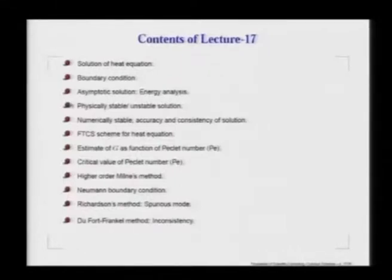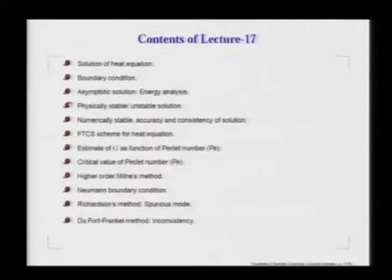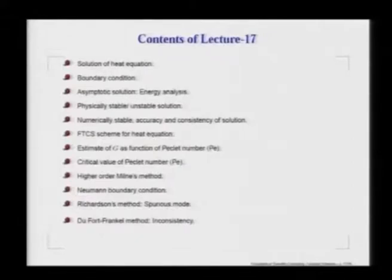This brings us to the topic of asymptotic solutions. We do this via an energy analysis and distinguish what is a physically stable and what is an unstable solution. We need to distinguish between these two cases — this is a constant theme in this course. Discretizing a physically unstable solution is a challenge, because we need to capture the physical instability while not allowing any numerical instability. That is why we will talk about numerical stability, accuracy, and the consistency of the method.